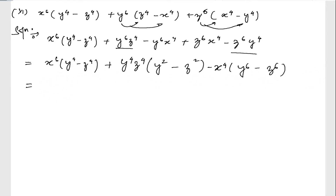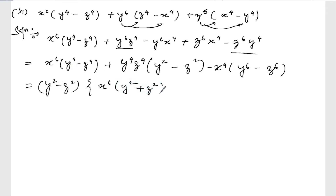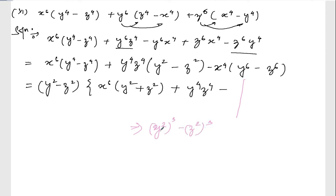Now let me take y squared z squared as the common factor. If I take y squared z squared common from the first term, what is left out is x to the power 6. From the second pair, taking y squared and z squared common leaves y squared plus z squared. I can write y to the power 6 minus z to the power 6 as y squared cubed minus z squared cubed, which equals y squared minus z squared into y to the power 4 plus y squared z squared plus z to the power 4.